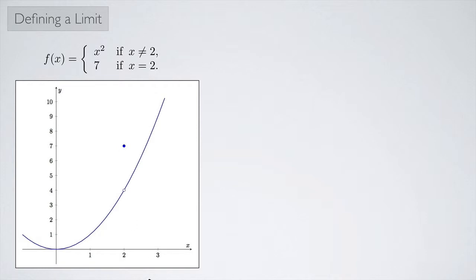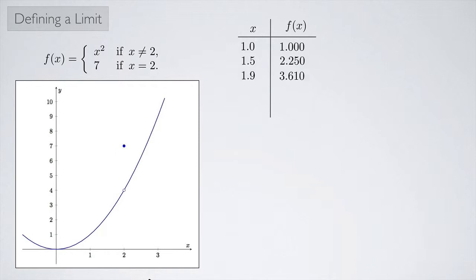We can look at a table of values as x approaches 2 from the left. If x is 1, then f(x) is 1. If x is 1.5, f(x) is 2.25, and so on. As x gets closer and closer to 2 from the left, the value of the function gets closer and closer to 4. This tells us that the limit as x approaches 2 from the left of f(x) is 4.